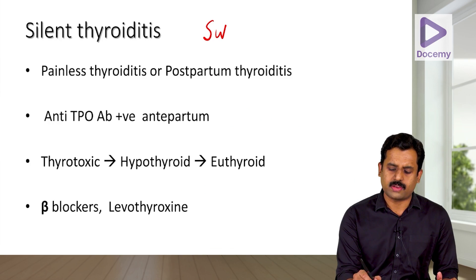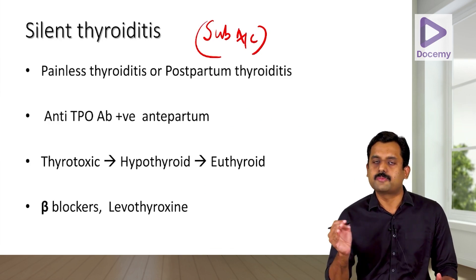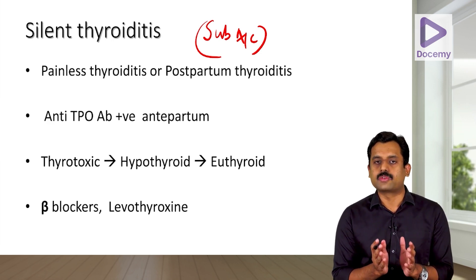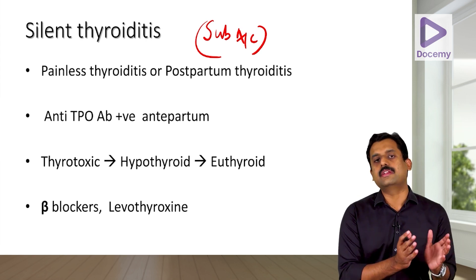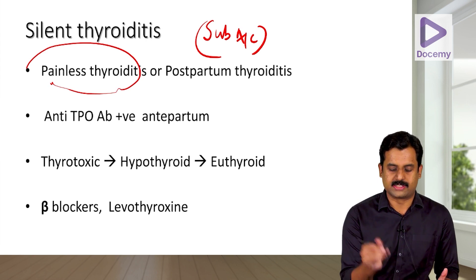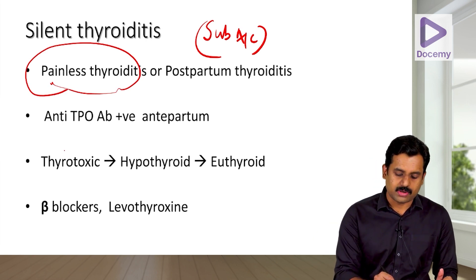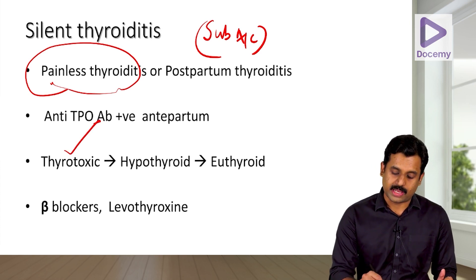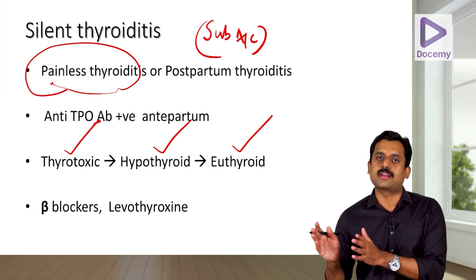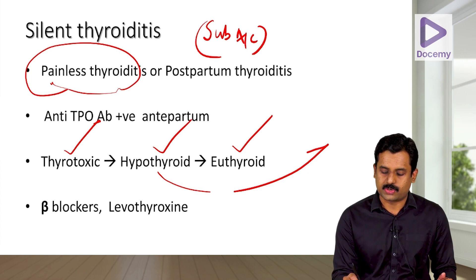Silent thyroiditis is a form of subacute thyroiditis that usually occurs in postpartum females who have anti-TPO antibody positivity in the antepartum period. They develop a painless thyroiditis with clinical features almost similar to de Quervain's thyroiditis: a thyrotoxic phase followed by a hypothyroid phase, eventually becoming euthyroid.